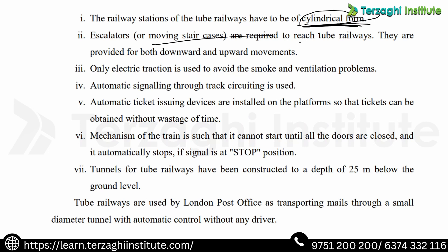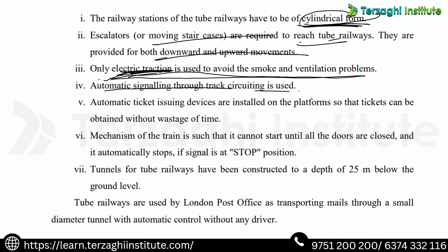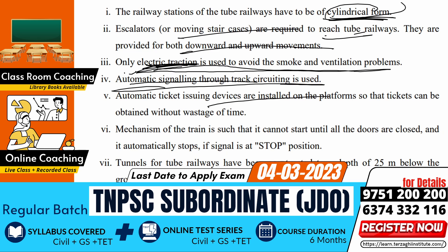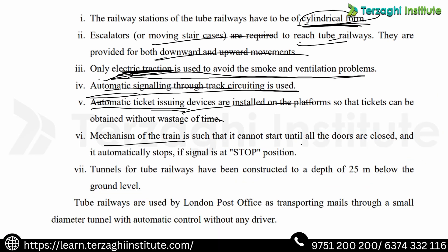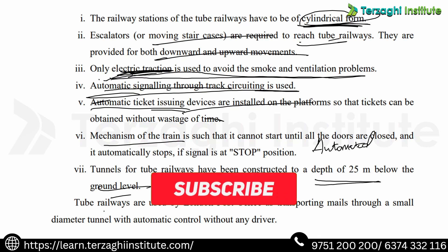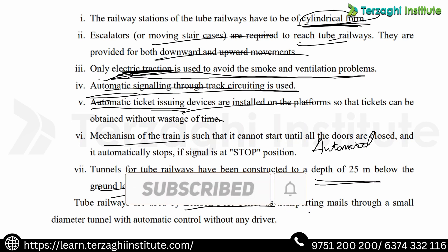Tube railway stations use escalators and moving stairs for downward and upward movement. Electric traction is used to avoid smoke and ventilation problems — not steam, diesel, or petrol. Automatic signaling through track circuiting is used underground. Automatic ticket issuing devices are installed. Train doors are automatically closed and automatically stopped at signals. The tunnels are 25 meters or more below ground level.